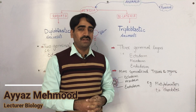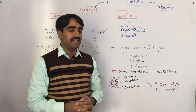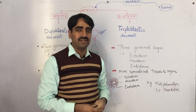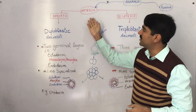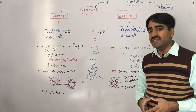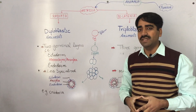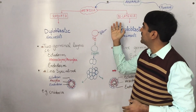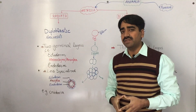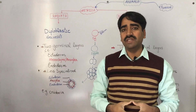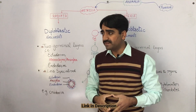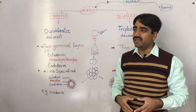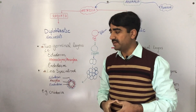In our first video we talked about the two groups of animals: the Parazoa, with no definite organization and no specialized tissue, and the Metazoa, with specialized organ systems. The Metazoa are further divided into Radiata and Bilateria based on symmetry — bilaterally symmetrical animals are called Bilateria and radially symmetrical animals are called Radiata.